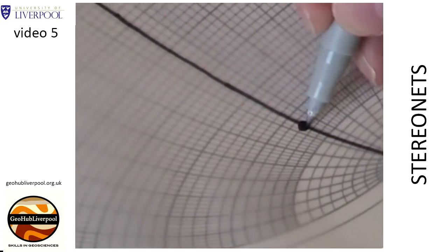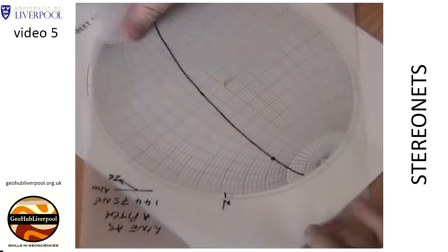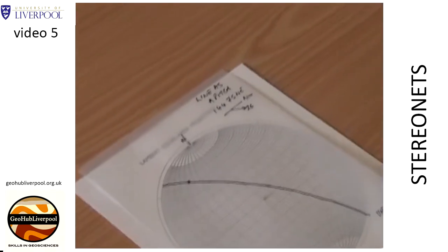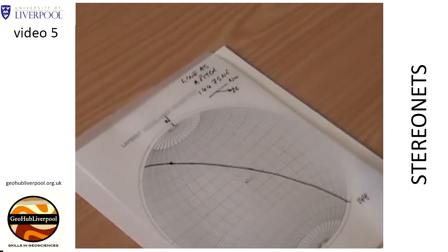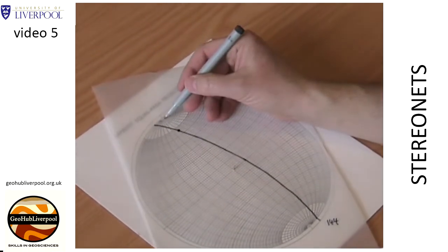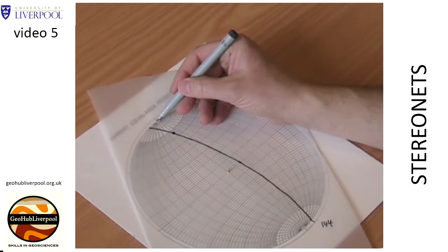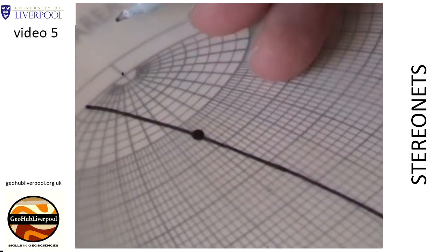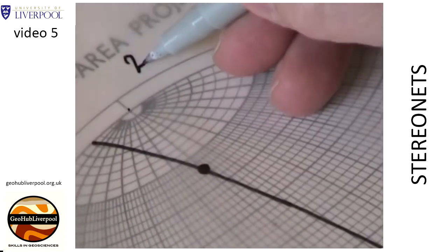Rotate the tracing paper so that this mark point lies on the north-south line on the stereo net. Mark the point where this north-south line intersects the primitive circle. From the primitive circle count the small circles from the North Pole to your mark. Write this measurement near your mark.